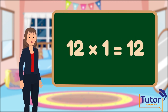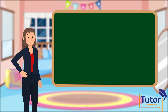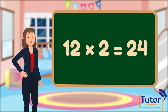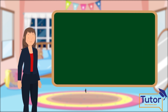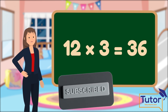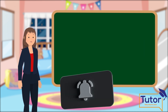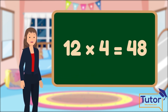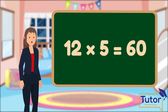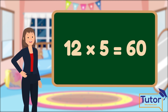12 multiply 1 equals 12. 12 multiply 2 equals 24. 12 multiply 3 equals 36. 12 multiply 4 equals 48. 12 multiply 5 equals 60.